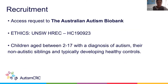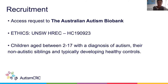We've received approval to access phenotype data and biological samples from the Australian Autism Biobank, and we've also received ethics approval from UNSW HREC. We'll be analysing phenotype data from approximately 1,000 children aged between 2 and 17 with a diagnosis of autism, 200 non-autistic siblings, and approximately 100 typically developing healthy controls. We'll then be performing biological analyses on a subset of 300 children.